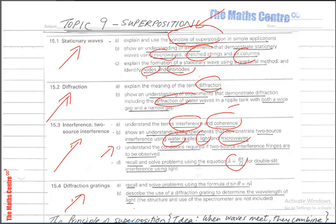For diffraction gratings, we will recall and solve problems using the formula d sinθ = nλ, and then we will describe the use of a diffraction grating to determine the wavelength of light.